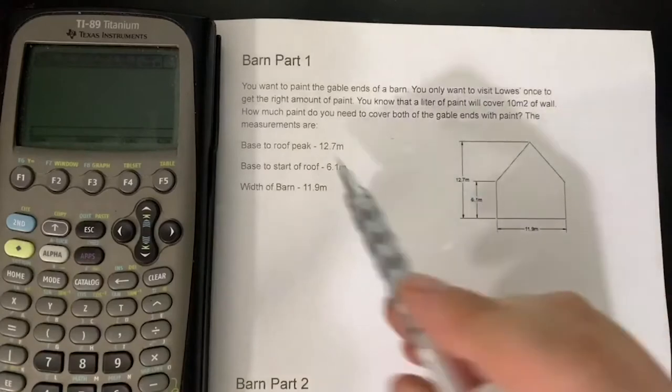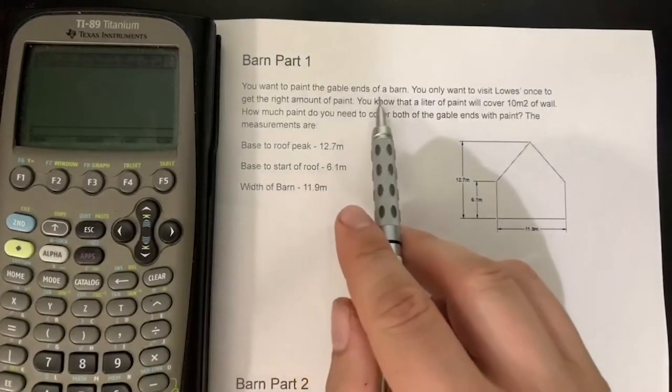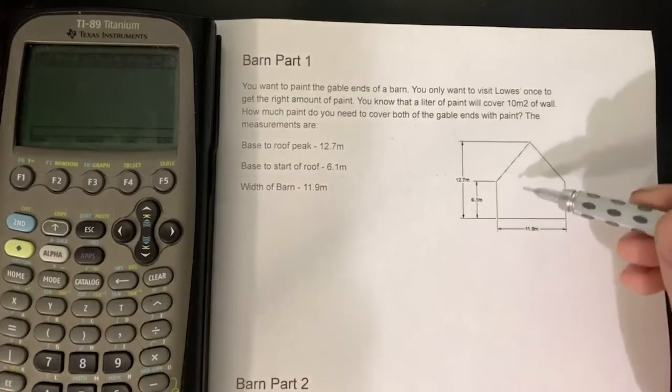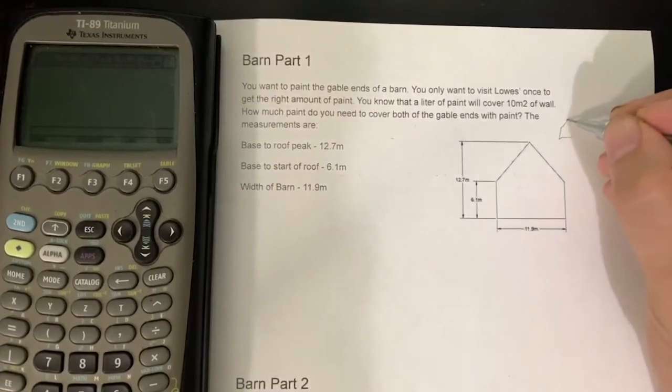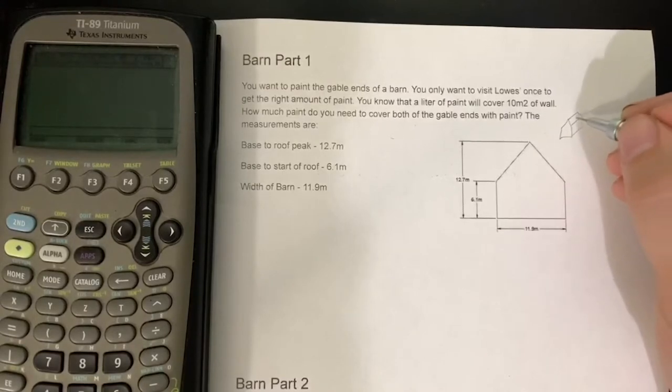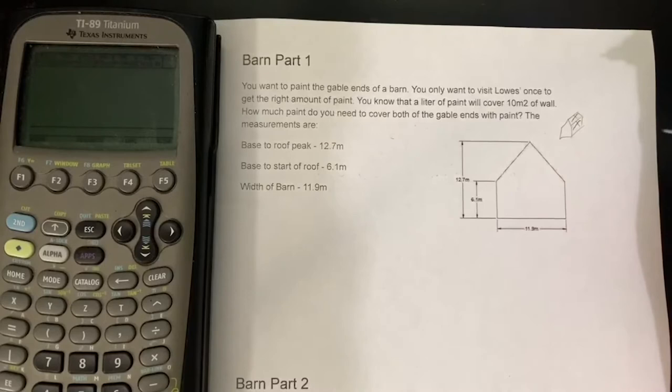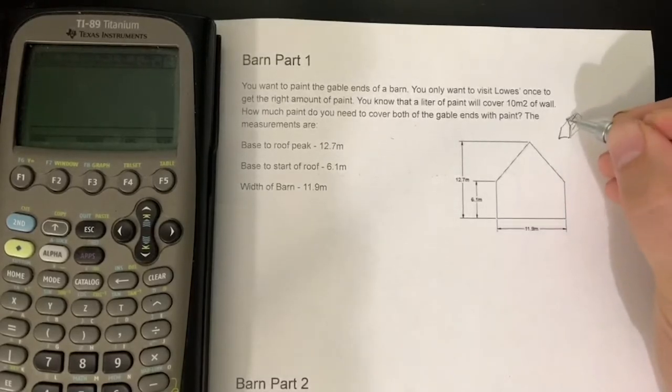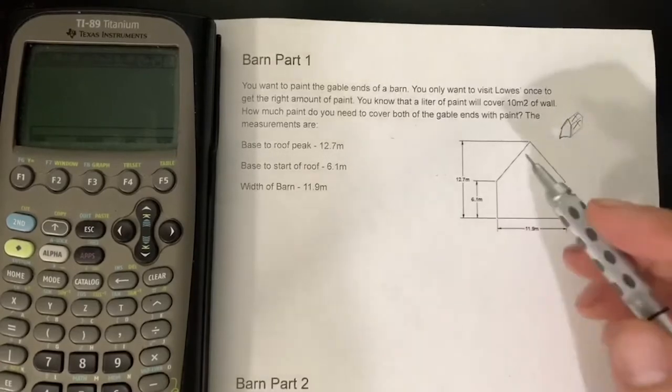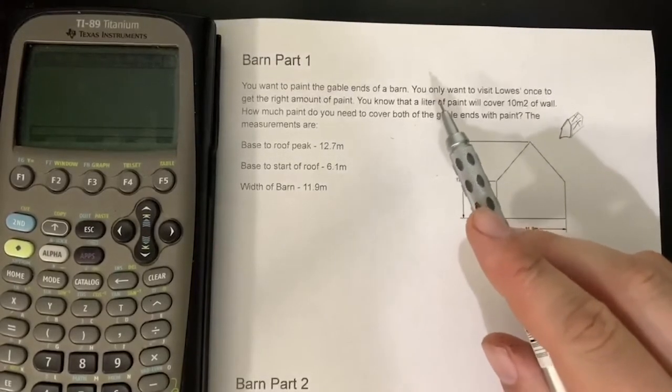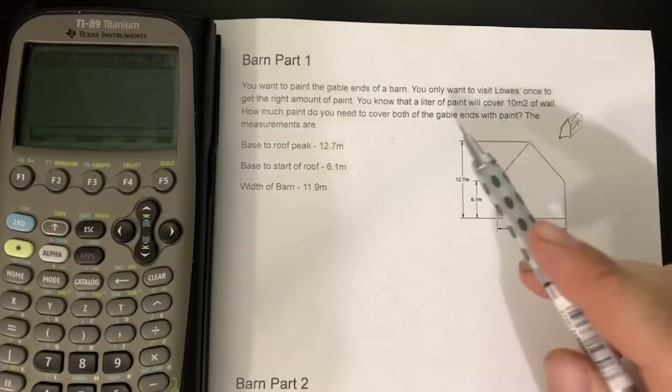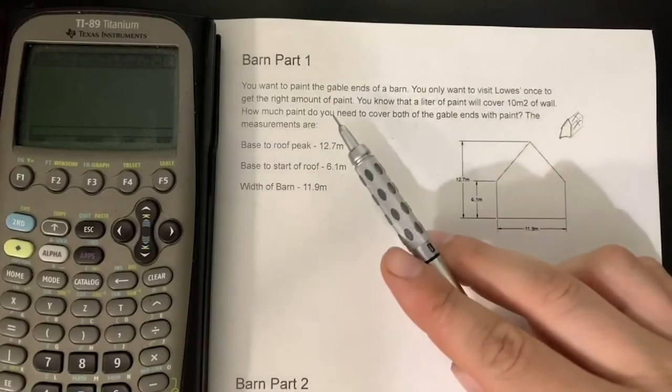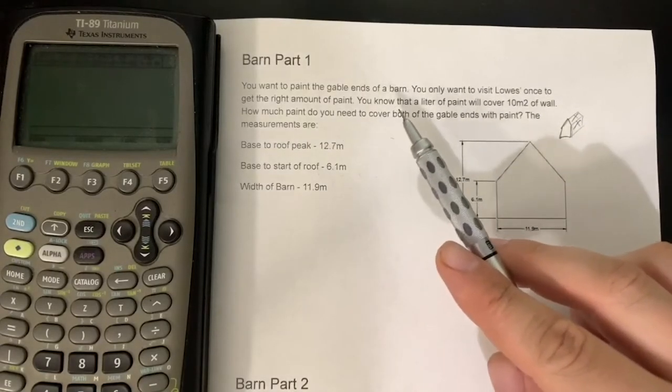Part one: we want to paint the gable ends of a barn. For those that don't know, gable ends are basically the front and back of the barns. We're not going to worry about the sides or the roof right now. We're only going to focus on the front and back of the barn. Now, in terms of this project, we only want to make one visit to Lowe's. We don't want to make trip after trip getting more paint. So we're trying to figure out the right amount of paint, and basically we need to know the liters that we'll need.